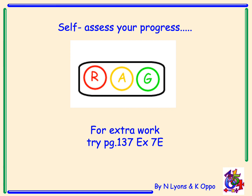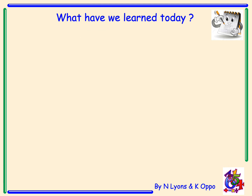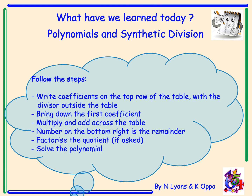For extra practice, try page 137, exercise 7e. What have we learned today? We've looked at both polynomials and synthetic division. To use synthetic division: write coefficients on the top of the table with the divisor outside; bring down the first coefficient, then multiply and add across the table; the number in the bottom right is the remainder. If asked, factorise the quotient fully and solve the polynomial.